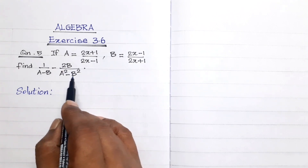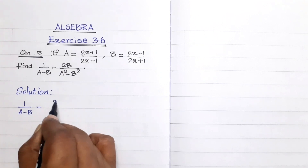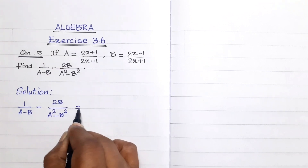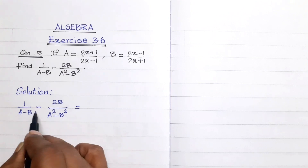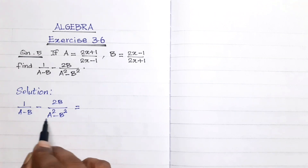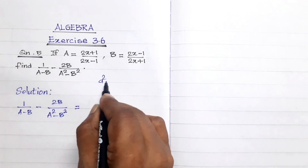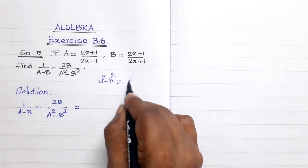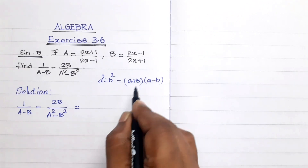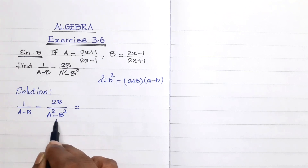Find 1 by (a minus b) minus 2b divided by (a squared minus b squared). Now, if you look at the two rational expressions, a squared minus b squared is of the form a squared minus b squared, which is equal to (a plus b) into (a minus b), where a equals capital A and b equals capital B.